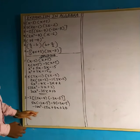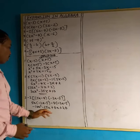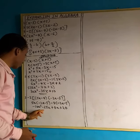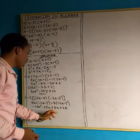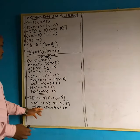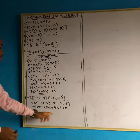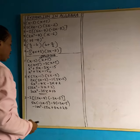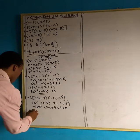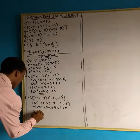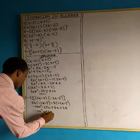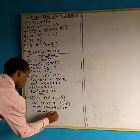Before we say it's our final answer, let's work on the like terms. Minus 25a plus 8a: minus plus is minus, so if we subtract, we get 17a, and we attach the negative. So we have minus 10a squared minus 17a plus 20.